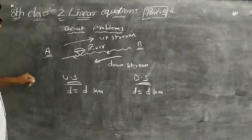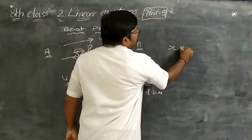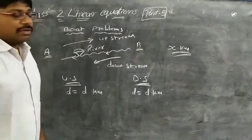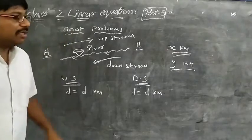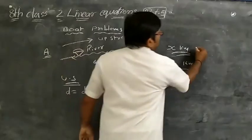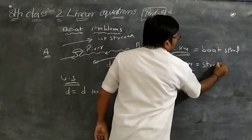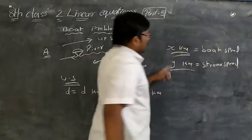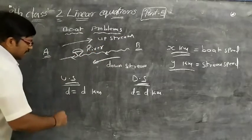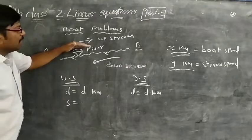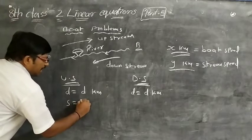What is the speed of the boat upstream? If the speed of the boat in still water is X km/h, and the speed of the stream is Y km/h, then in upstream, the speed equals boat speed minus stream speed — that is X minus Y km/h.